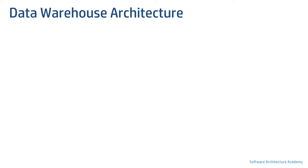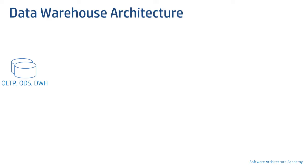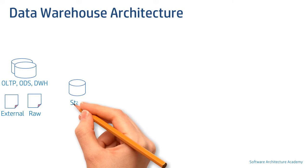Let's start discussing what types of source systems can input data into a data warehouse. We can have OLTP systems, ODS, and even another data warehouse — yes, a data warehouse can send data to another data warehouse. In addition, there can be raw files directly inputted, as well as data coming from outside the organization, which is an external source.